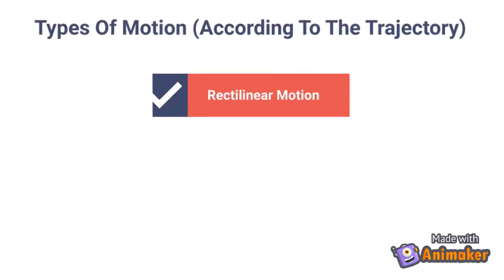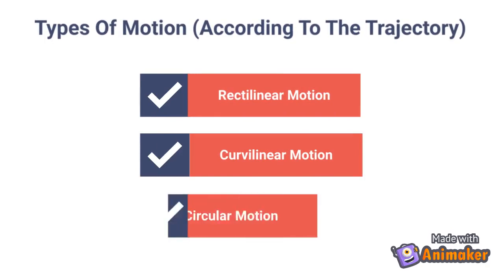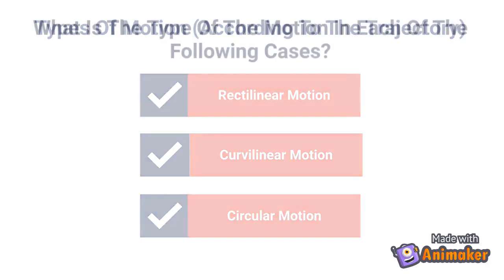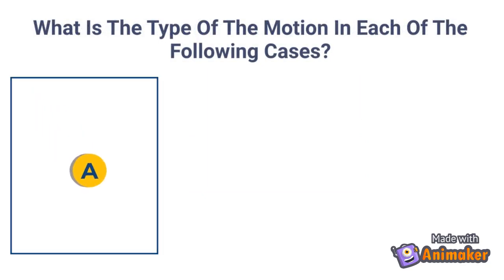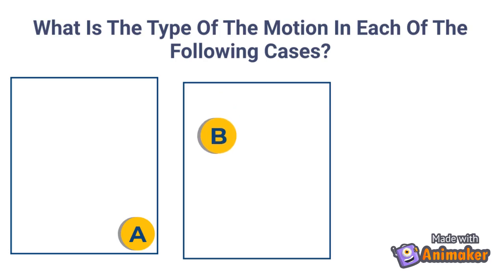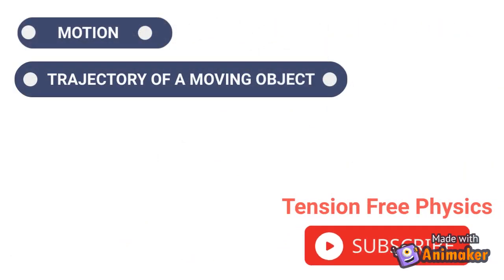To sum up, we studied three types of motion according to the trajectory: rectilinear motion, curvilinear motion, and circular motion. What is the type of motion in each of the following cases? In this video, we studied the trajectory of a moving object.